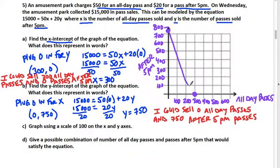Part D says give a possible combination of all-day passes and passes after 5 p.m. that would satisfy the equation. That's the big thing - it has to work in the equation. What you can do is look on your line and try to pick out a good combination.